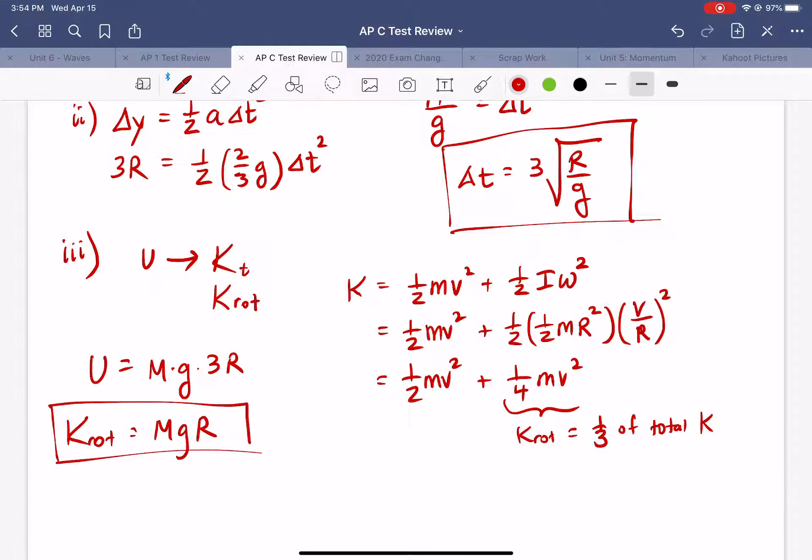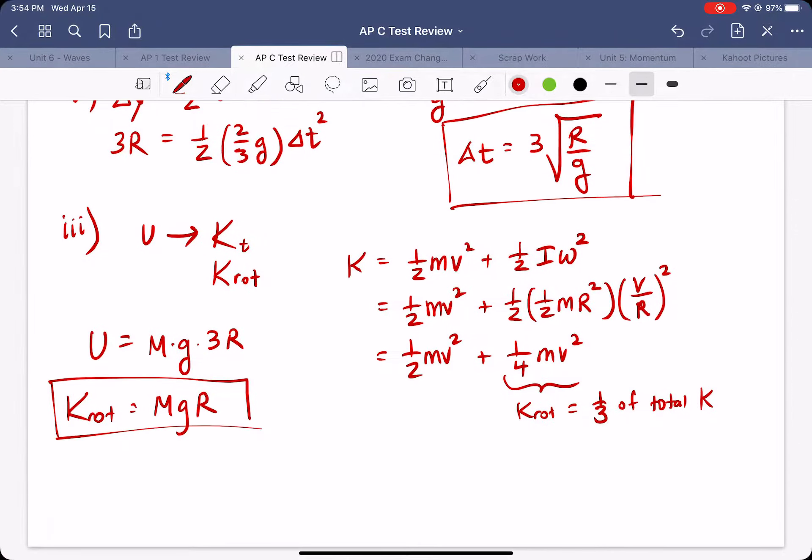All right let me show you an alternate way of doing this if this seems a little too abstract. The other thing we can do is just figure out what omega actually is. We know the acceleration of this object is 2/3 g so we know the angular acceleration will be that divided by R.